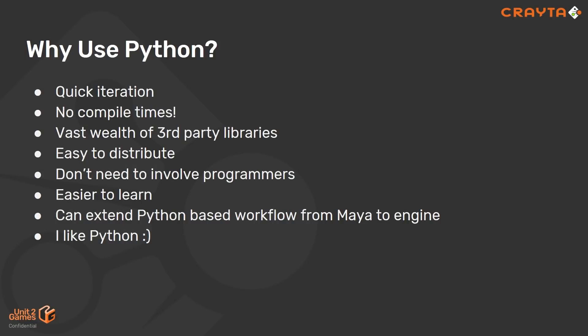With our small team, we've only got very limited engineering bandwidth available. Whatever we can take care of within the art team internally, without having to hassle the engineering team, is quite a big win. Also, in comparison to something like C++, it's quite easy to learn. If you've never touched coding or scripting before but you're interested in automating pipelines with Unreal, it's a great place to start. If you're using something like Max or Maya and using Python within that, you can extend your workflow all the way up to the Engine. Also, I just like Python — it's a good language.